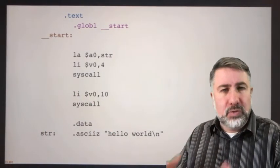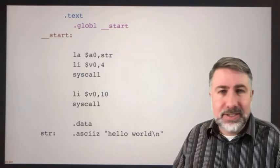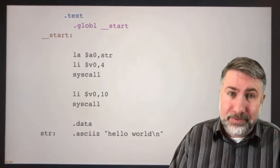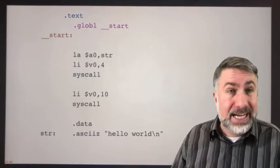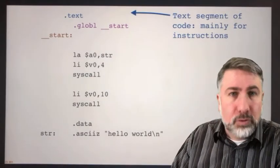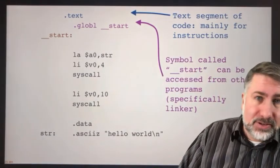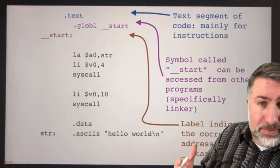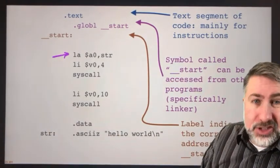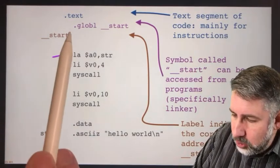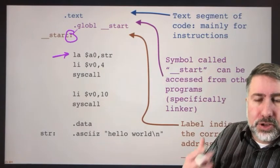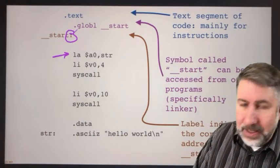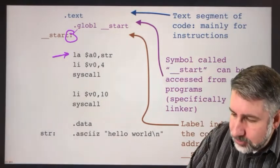Dot global start and underscore underscore start say this is where the program starts executing. What this does is it allows the assembler, when it loads this program onto the computer, to put the address of the first instruction into the program counter so that execution starts there. Dot text starts the text segment; dot global start and then the start label work together to put the program counter at the first instruction in your code. When you have something with a colon after it, this is a label that the assembler uses to determine the 32-bit memory address of either the code or the data as it's placed into memory.